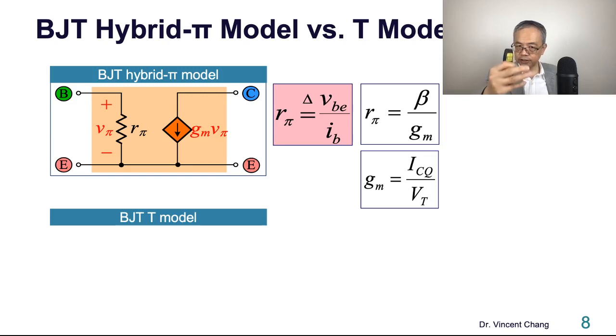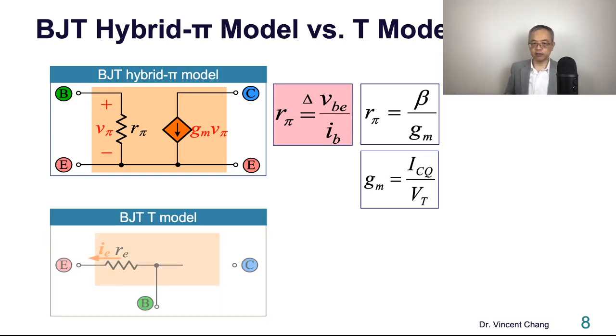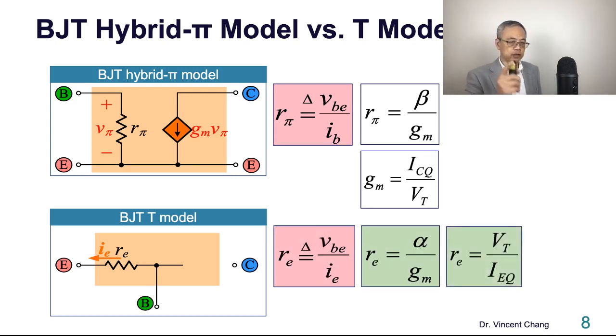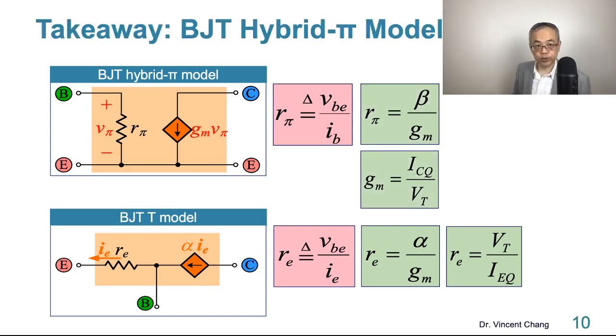And then here comes the T-equivalent model. This highlights the resistance between emitter and base looking into the emitter. And then formulation. Look at your left-hand side. Current control, because IC equals alpha times IE. Current controlled current source. On the top, it's the voltage control current source. When it comes to the dependent source, we use the diamond shape.